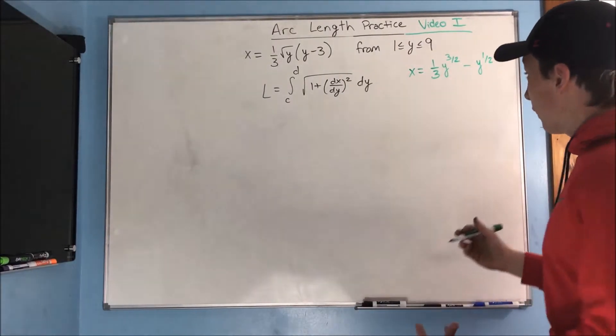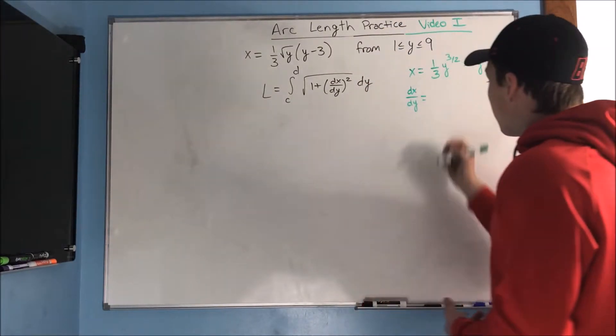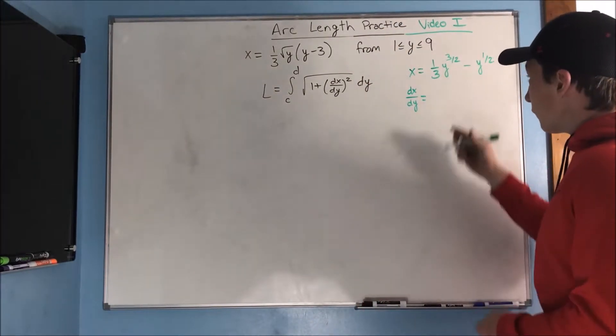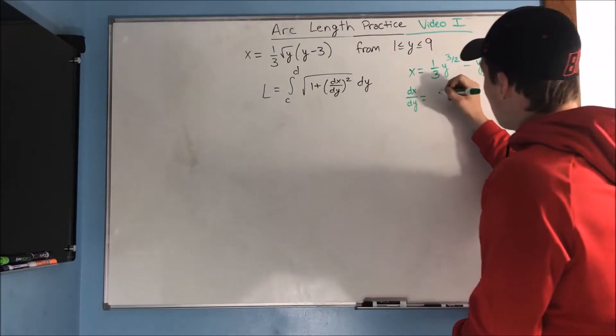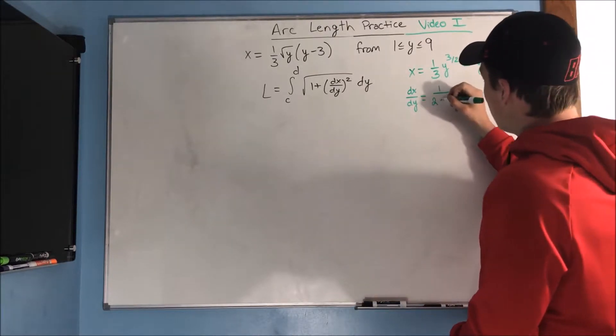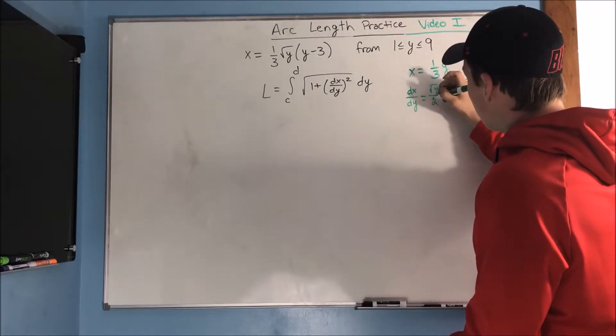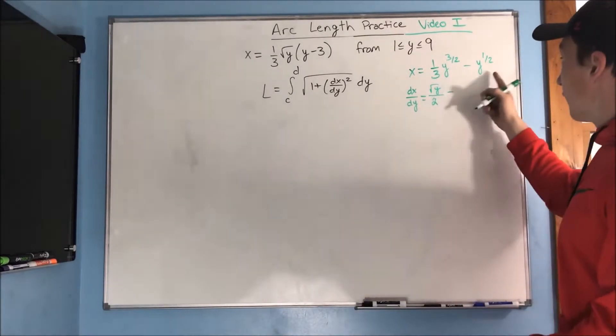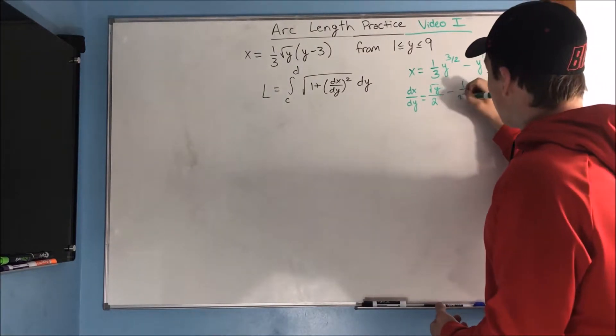And now we can find the derivative of that. dx dy is going to equal, well, we bring this down, 1 third times 3 halves, it's just going to be a 1 half, and then this goes down to be a rad y, so we get a rad y over 2, and then this becomes y to the 1 half, that's just going to become 1 over 2 rad y.